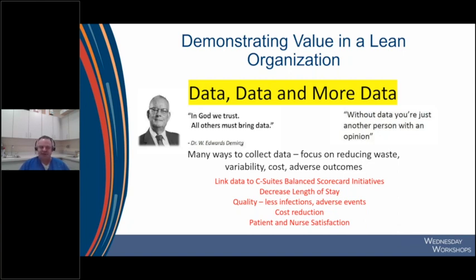I would always go to my CNO and tell her we have problems — IVs are a mess, we can do better. And she would always say, 'Go get the data.' So I decided that's what I was going to do. If you're a lean facility, I highly encourage you to focus on reducing waste, variability, cost, and adverse outcomes. Take everything you do and link it to the C-suite balanced scorecard initiatives — the dashboard that administration uses to track key performance metrics.